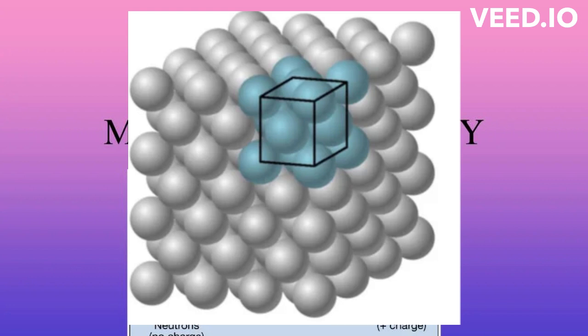Therefore, in the unit cell, which is the building block of a crystal, substitution occurs in this crystal structure.